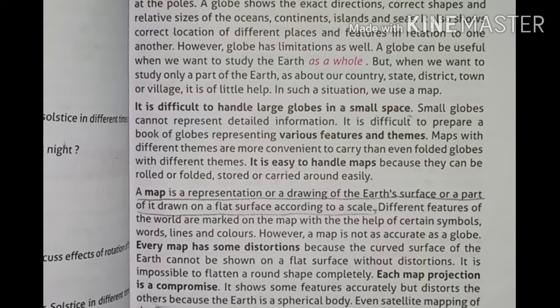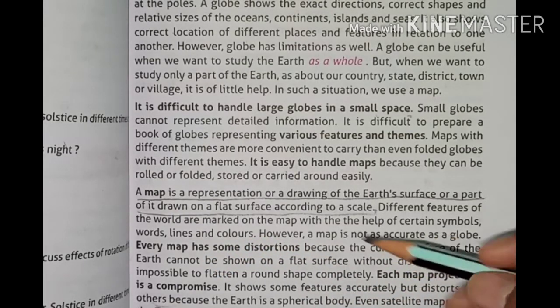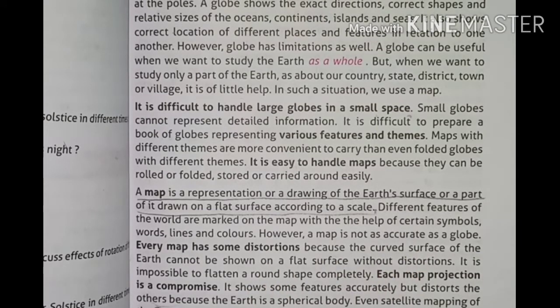Words are marked on the map with the help of certain symbols, words, lines and colors. However, a map is not as accurate as a globe. The map is not accurate as a globe is accurate, but it gives the same type of scale.